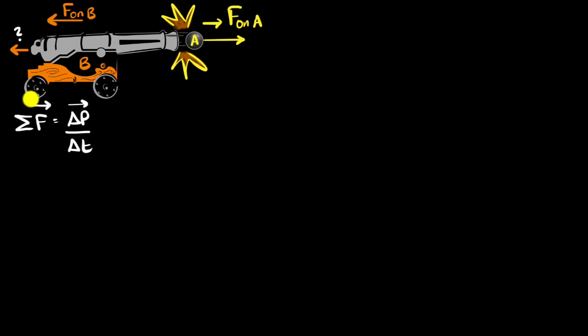So if I call this ball as A, then we know it's the cannon that is pushing the ball forward — putting a force forward on A. And therefore, from Newton's third law, we know that the ball must be pushing the cannon backward. So it's the ball that is putting a force on the cannon. Let's call the cannon as our object B over here. Now there will be other forces acting over here like friction and air resistance, but let's ignore them and assume those forces are very negligible.